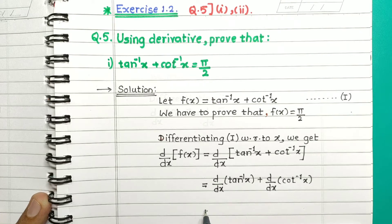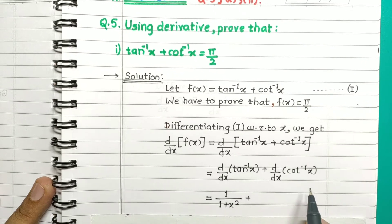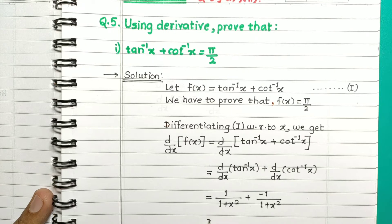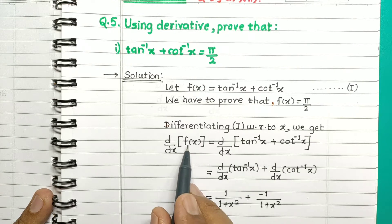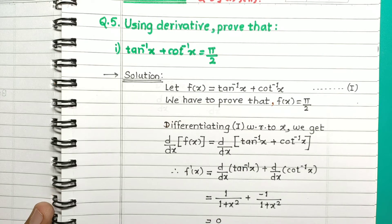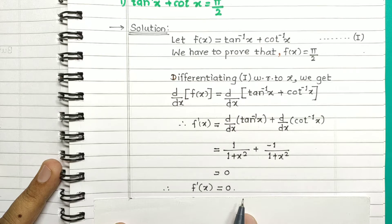We know these standard results: derivative of tan inverse of x is 1 upon 1 plus x square, and derivative of cot inverse of x is minus 1 upon 1 plus x square. So these cancel and it becomes 0, meaning f dash of x is equal to 0.